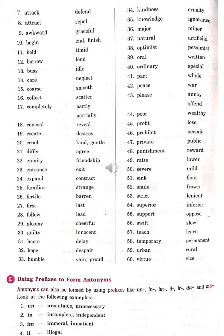Prohibit (Mana Karna) – Permit (Agya Dena). Private (Niji) – Public (Sarvajanik). Punishment (Saza) – Reward (Inaam). Rage (Khadakarna) – Lower (Down Karna).